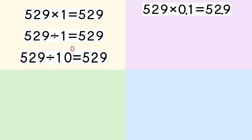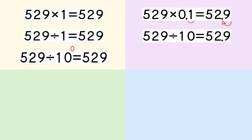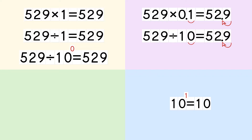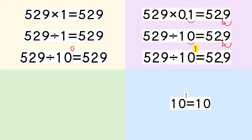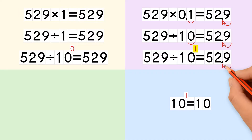When we multiply a number by 0.1, we move the decimal point 1 place to the left. Multiplying by 0.1 is the same as dividing by 10, or finding 1 tenth of a number. So when we divide by 10, we move the decimal point 1 place to the left. 10 equals 10 to the power of 1, so when we divide a number by 10 to the power of 1, we move the decimal point 1 place to the left.